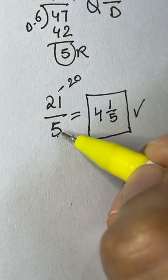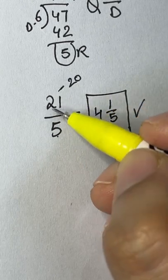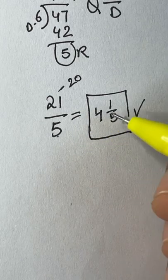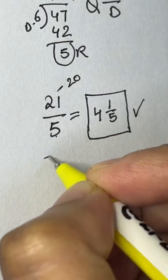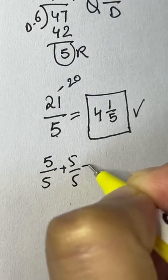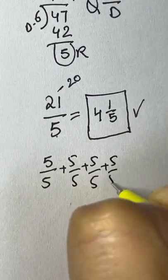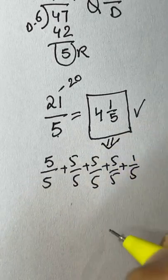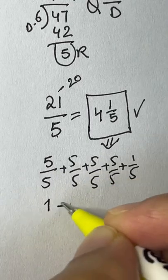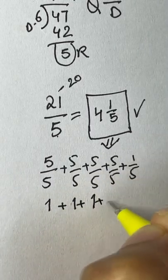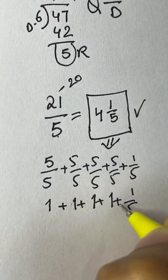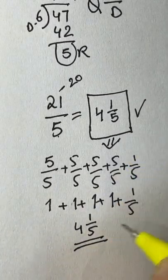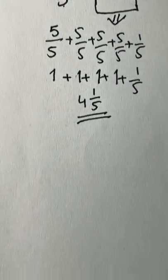So 4 is the whole number — that means you have four wholes. This represents 5/5 plus 5/5 plus 5/5 plus 5/5, four times, plus 1/5. That's what 4 and 1/5 represents: four complete wholes and one fifth. That was the second shortcut trick — you can do it mentally.